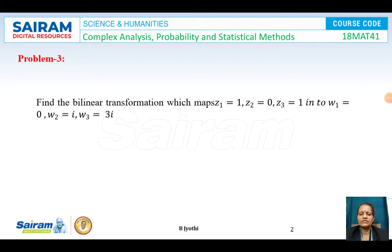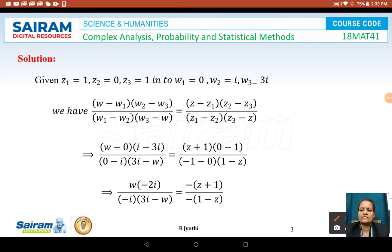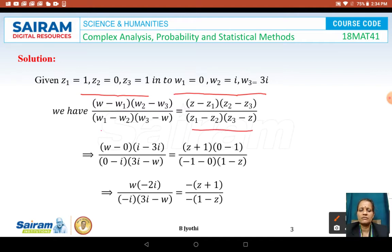Find the bilinear transformation which maps z1=1, z2=0, z3=-1 to w1=0, w2=i, and w3=3i. We name these values respectively and apply the cross-ratio formula: (w - w1)(w2 - w3) / (w1 - w2)(w3 - w) = (z - z1)(z2 - z3) / (z1 - z2)(z3 - z).